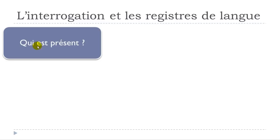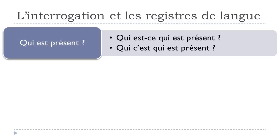The first question is QUI EST PRÉSENT? That's the normal formal way. Then the everyday option is QUI EST-CE QUI EST PRÉSENT? And then the spoken informal way: QUI EST QUI EST PRÉSENT? Don't use that last one if you're unsure of the context. I'd rather advise you to use the first or second: QUI EST PRÉSENT? or QUI EST-CE QUI EST PRÉSENT? We tend to use EST-CE QUE or EST-CE QUI in oral language.